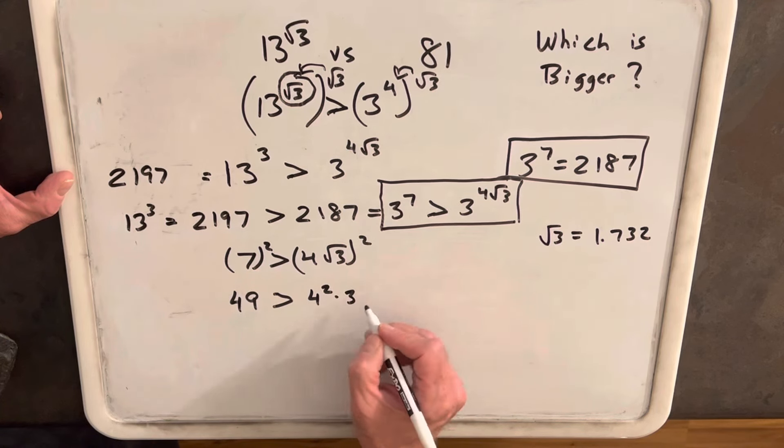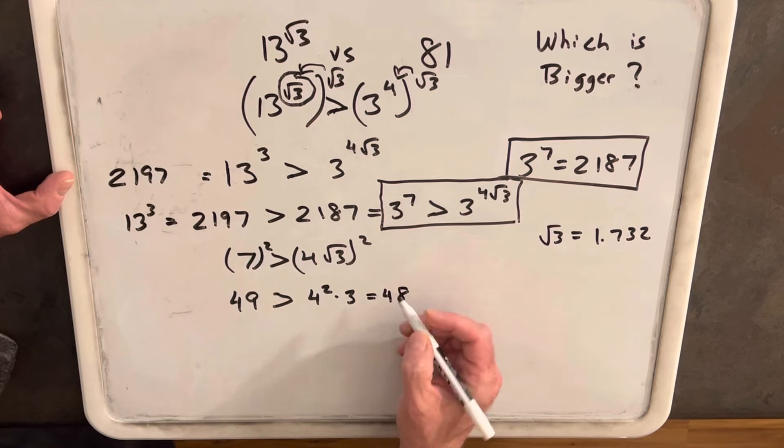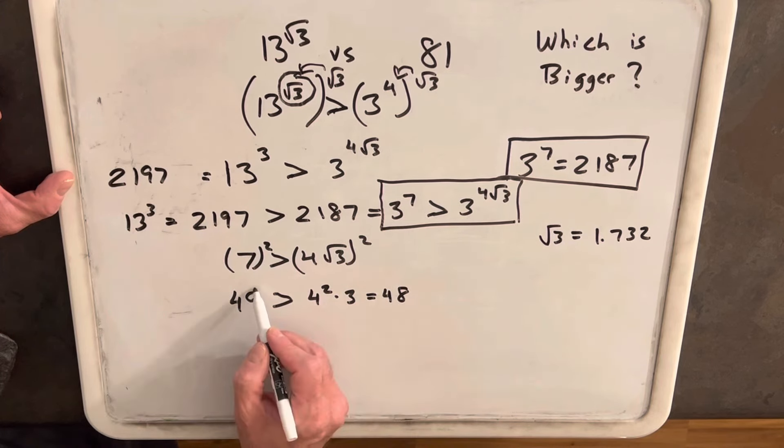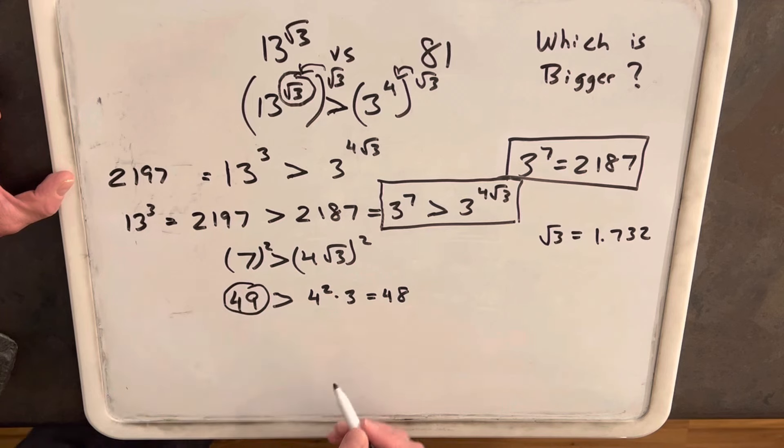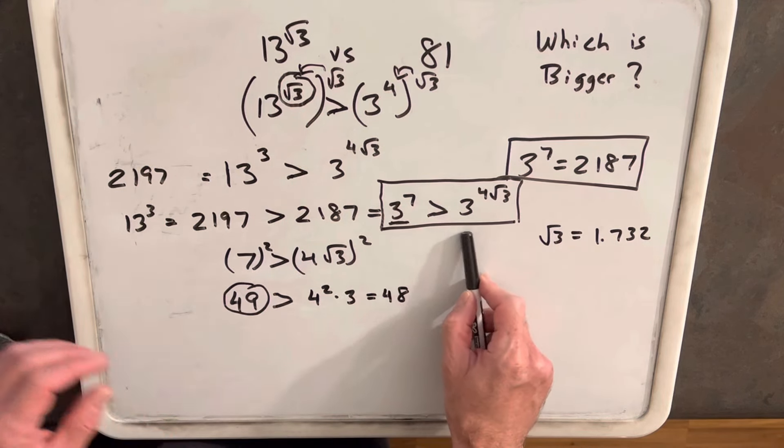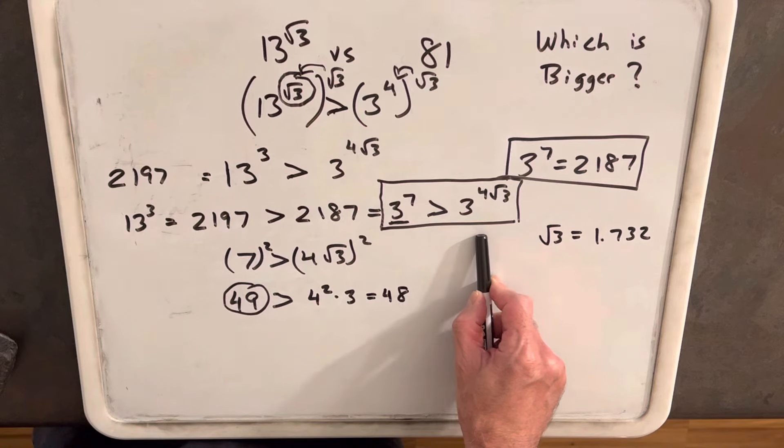But this is 16 times 3, and that's just 48. So it turns out 49 is bigger than 48. So 3 to the 7th is greater than 3 to the 4 square root of 3.